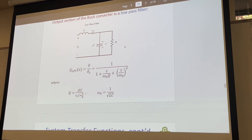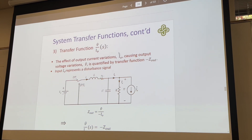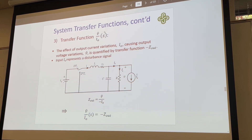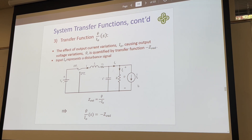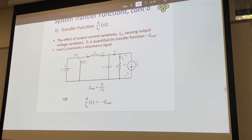We have our system transfer function for the effect of output current variations. If our load suddenly changes, we would have a change in our output current causing voltage variations in our output, quantified by the transfer function negative Zout. The input IO represents a disturbance signal — the current suddenly changing at our output. So Zout can be equated to our output voltage over any change in the output current.